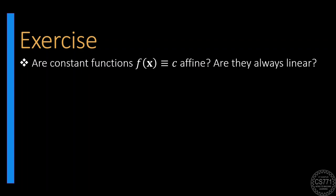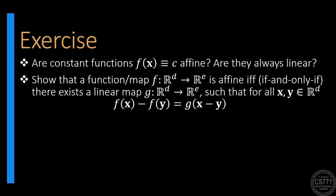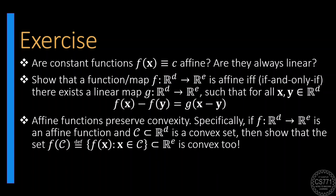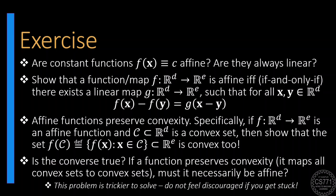Time for some more fun exercises. Are constant functions always affine? Are they always linear? Linear and affine functions are figuratively joined at the hip in more ways than one — show this cute result relating linear and affine functions. It turns out that affine functions have a curious property of preserving convexity: if the inputs to an affine function are all the elements of a convex set, then the outputs also form a convex set, irrespective of whether the outputs are scalars or vectors. If you are up for a challenge, you can try to show the converse as well — that every convexity-preserving map must be affine.